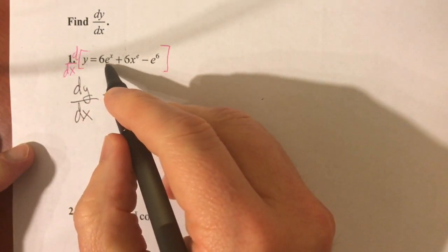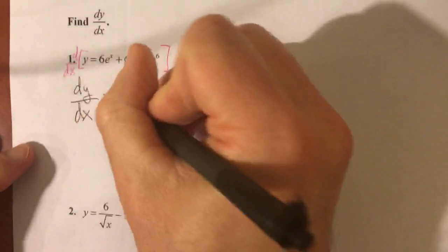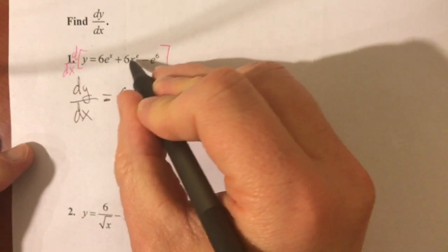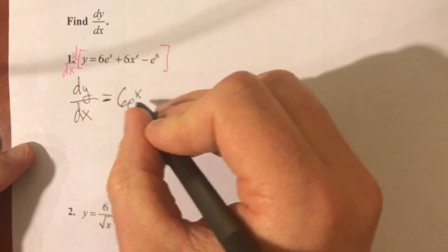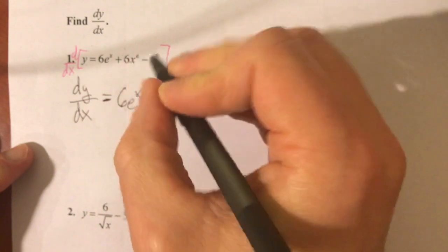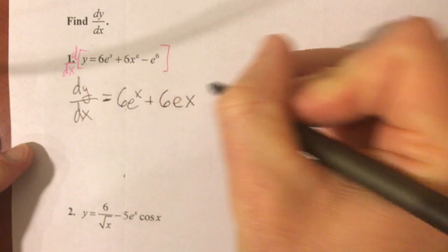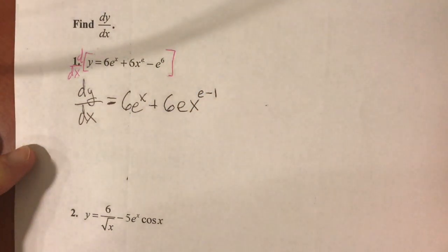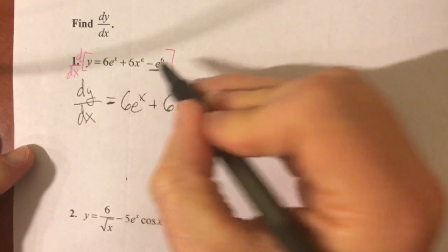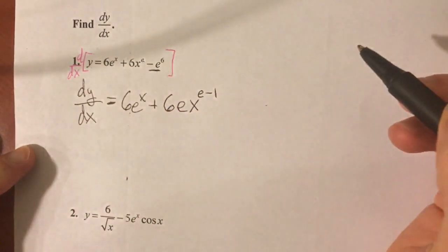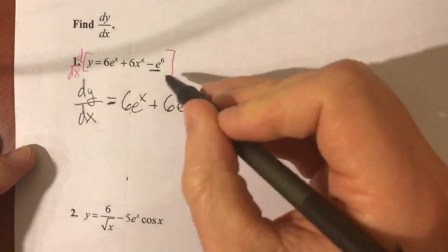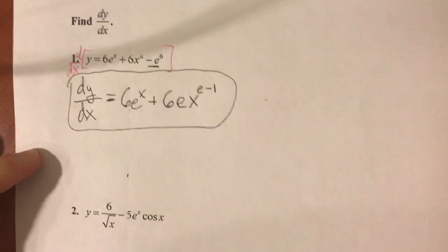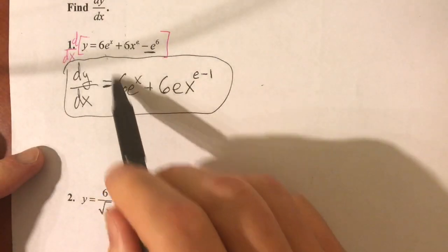So the derivative of 6e to the x is just 6 times the derivative of e to the x, which is e to the x. Now 6x to the e, I know it's e, but that's just the constant and that's the exponent. So this is what you could use the power rule for. So we have 6e to the x plus, and this would be e times 6, so we'll call that 6e. Yep, I'm bringing 6e back, here we go. x to the, and you subtract 1 from that exponent, and it's e minus 1. That's all you can call that, right? And now the derivative of this, minus e to the sixth. There's no variable in this, don't be fooled by that. It's just a big constant, e to the sixth, and the derivative of any constant is zero. So that part is gone.